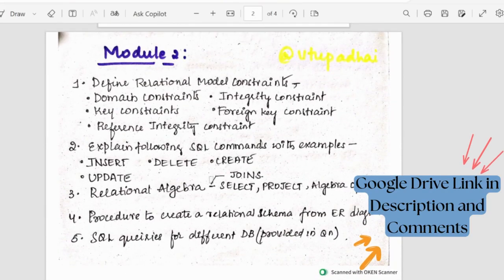Looking at the second module, the second module is pretty easy I would say. Because here 10 marks or 8 marks, they'll ask us to write queries for the given database. It will be provided in the question. Then we have a procedure to create relational schema for ER diagram. This could be asked for five or six marks.